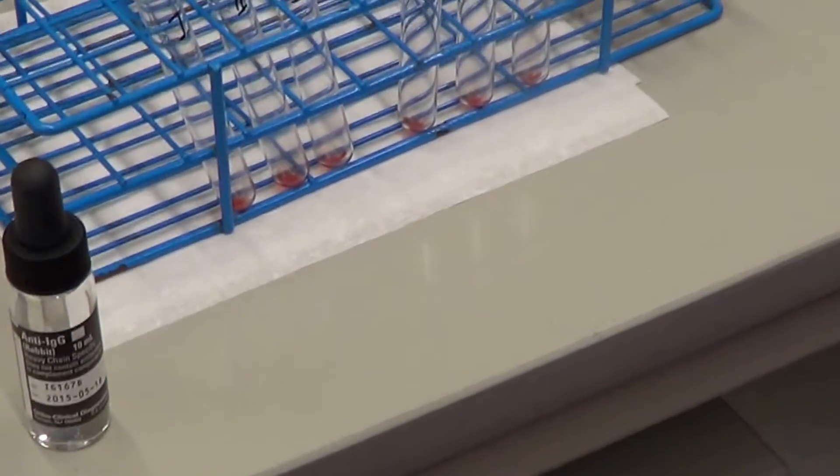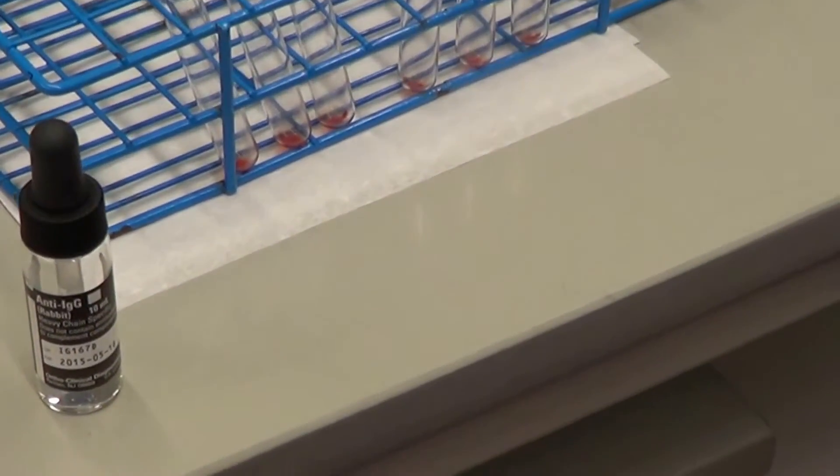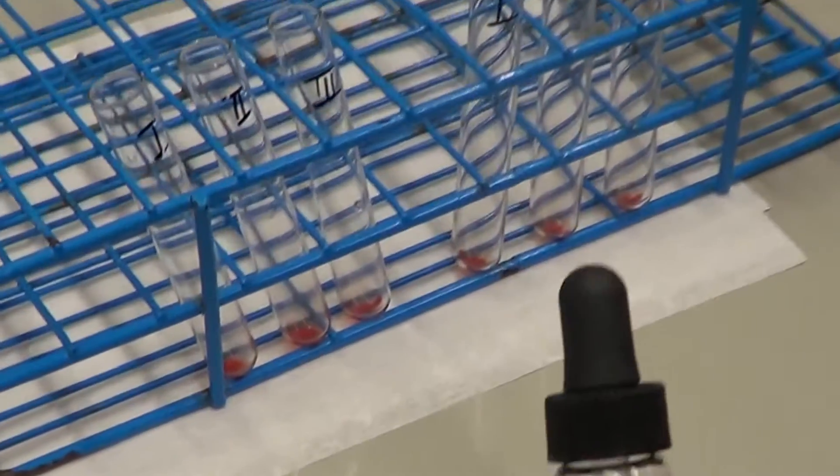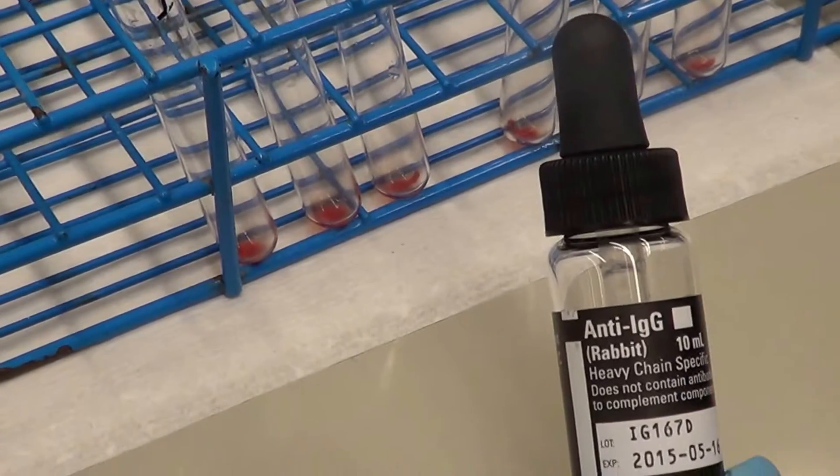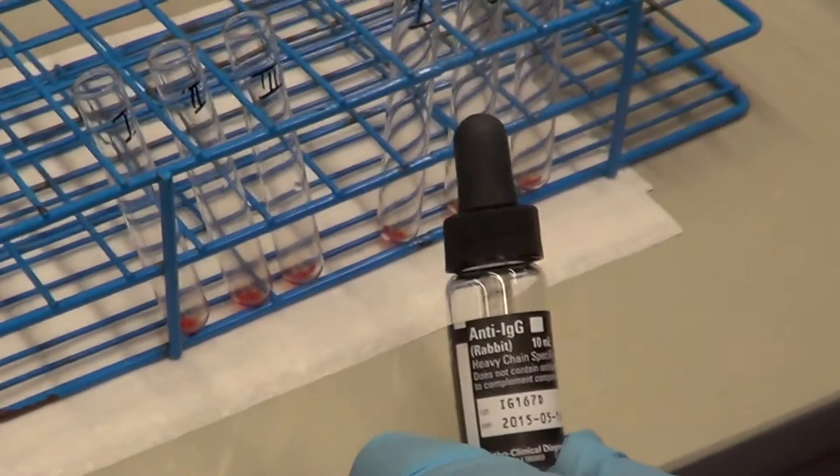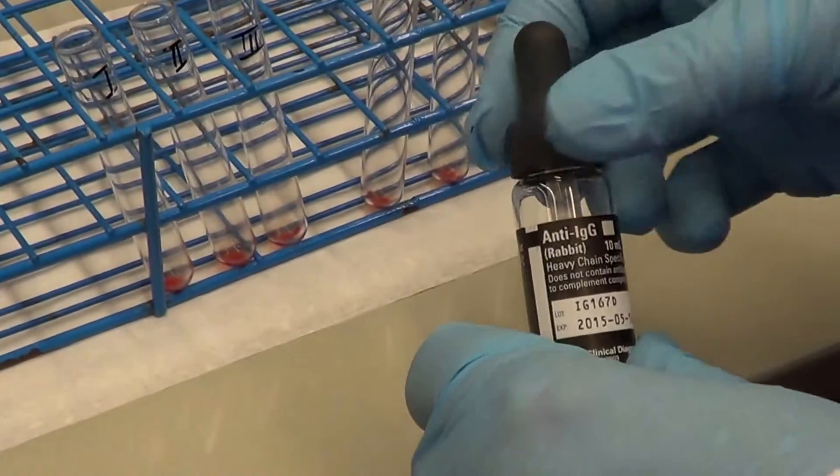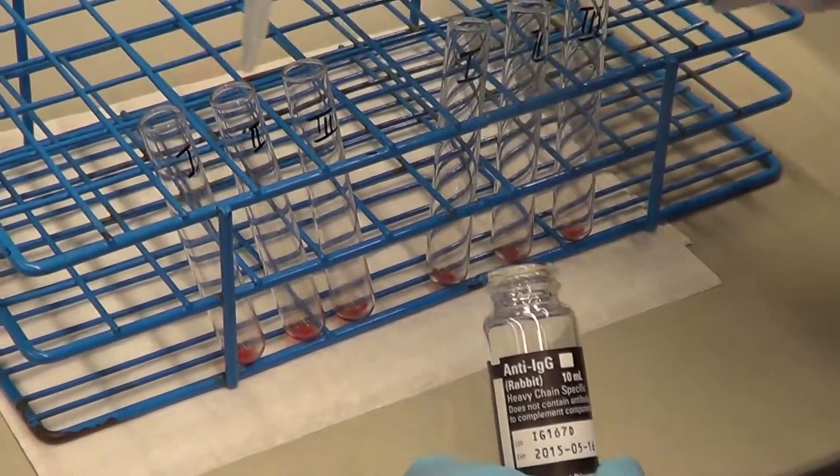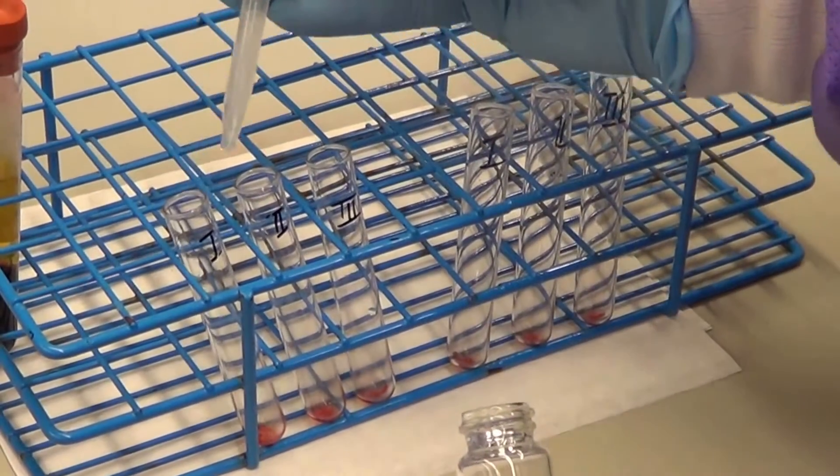The third phase of testing is the anti-human globulin test. At this stage, after we washed the cells and we removed all of the excess patient serum, we add two drops of our anti-human globulin. We are adding anti-IgG. We add two drops to each test tube.